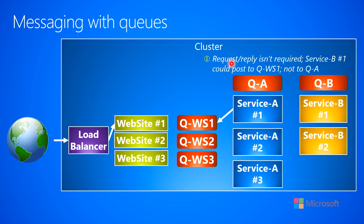So that's what this node is over here — request-reply isn't required in this scenario. Service B instance one could post to the queue for website number one and doesn't have to queue to queue A, unless of course service A needed to do some post-processing after service B was done with its workload. But that depends on what your scenario is exactly.